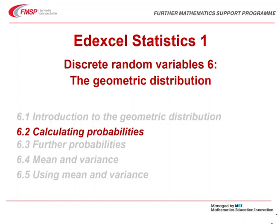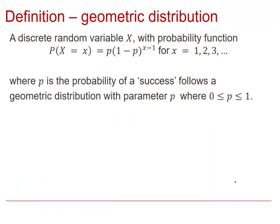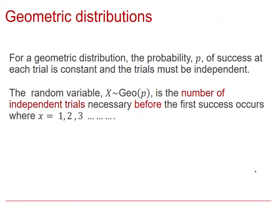Hello and welcome to this Edexcel Further Statistics 1 video on calculating probabilities from the geometric distribution. This slide recaps what we did in the previous video and gives the definition of the geometric distribution. With a geometric distribution, the one parameter is the probability P of success at any one trial. P is constant, the trials must be independent, and x represents the number of independent trials necessary before the first success occurs. The first discrete outcome possible for x is x equals 1.